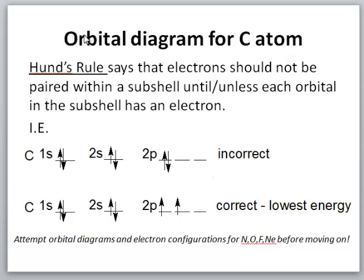Now if we want to make an orbital diagram for carbon, we need to add one more electron. At this point we have to consider something called Hund's rule. This says that electrons should not be paired within a subshell until and unless each orbital in the subshell has one electron. In other words, electron number 6 cannot be put into the same orbital as electron number 5 — that would be incorrect. It has to go into a different orbital. Two electrons in the 2p orbitals cannot be paired until each orbital in the 2p subshell is occupied with one electron. This is the correct orbital diagram for carbon, with two electrons in the 2p subshell. By convention we put electrons in from the left and work our way across.